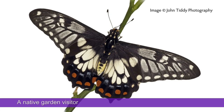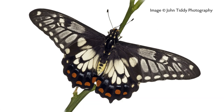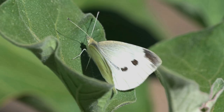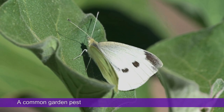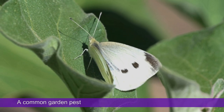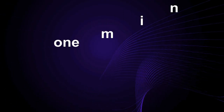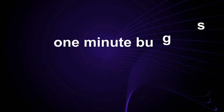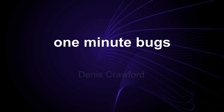G'day there. This is a story about an unusual connection. Here is a dainty swallowtail, otherwise known as a small citrus butterfly. And here is a cabbage white butterfly. Let's see what the connection is between these two. Welcome to One Minute Bugs. I'm Dennis Crawford.